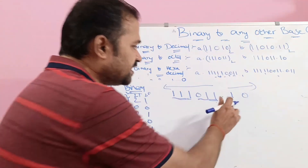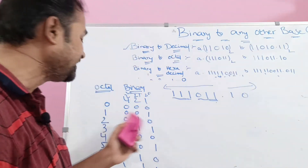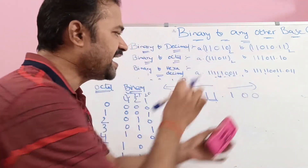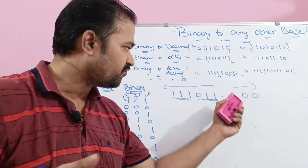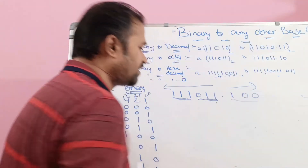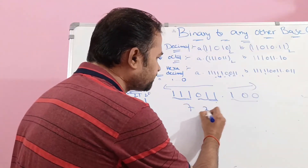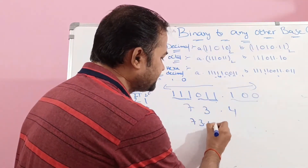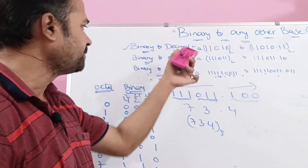The integer part groups give 7 and 3 as before. For the fractional part, only two bits are given (1, 0) so we append one zero to make a group of 3: 100 = 4. The result is 73.4 base 8.